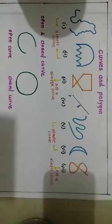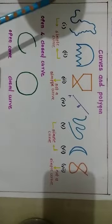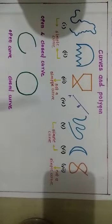Today we see the topic curves and polygon. Let us understand first what is a curve. Here I have taken a piece of paper and simply doodled it. The pictures that are the result of your doodling are called a curve. Whenever you draw any figure without lifting your pencil, the figure that you get is called a curve, and a curve can be of any shape.